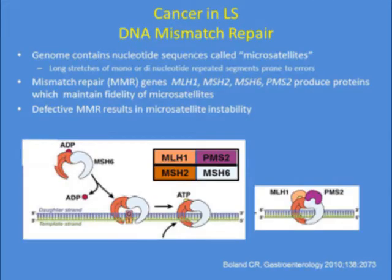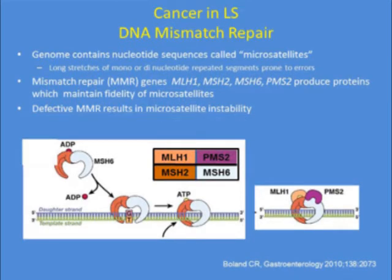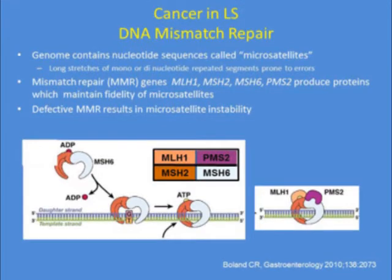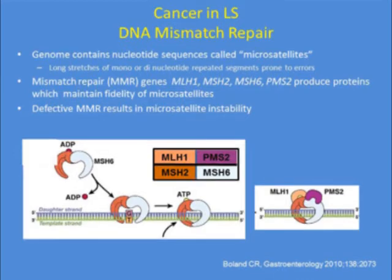The cancer in Lynch syndrome develops from a defect in the DNA mismatch repair genes. Your genome contains many conserved nucleotide sequences, including repeated segments of mono- or dinucleotide repeats — the microsatellites. The four mismatch repair genes — MLH1, MSH2, MSH6, and PMS2 — produce proteins that are enzymatic complexes which identify mismatched nucleotides and repair them. Defective mismatch repair can result in microsatellite instability in your tumor.